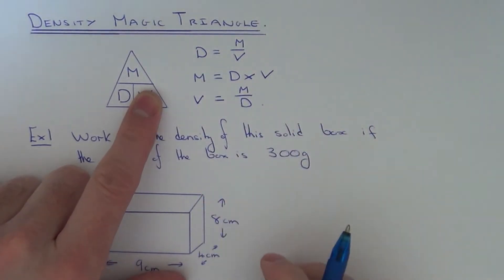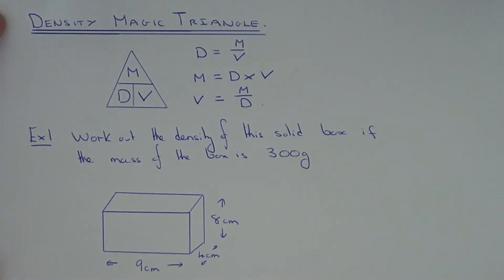So these are the three formulas which you can use relating density, mass and volume. Let's have a look at a quick example.